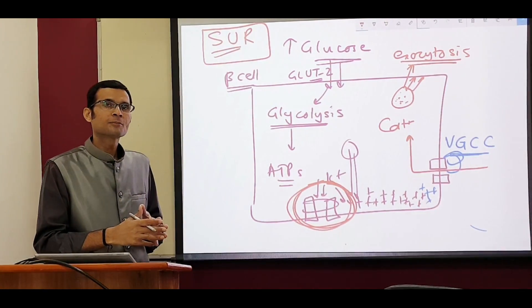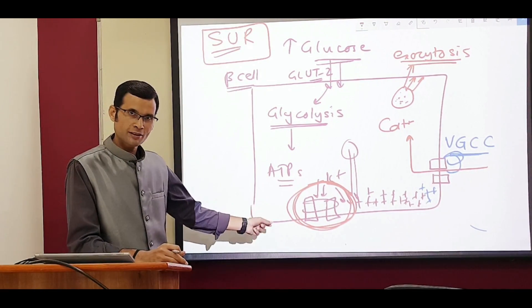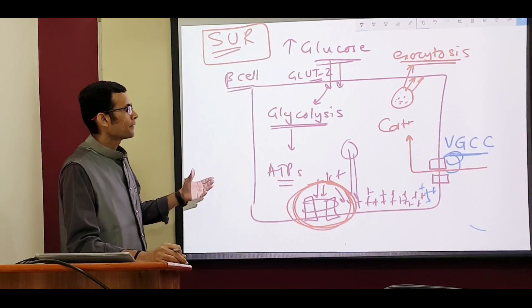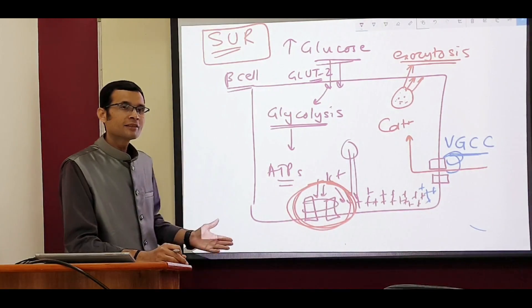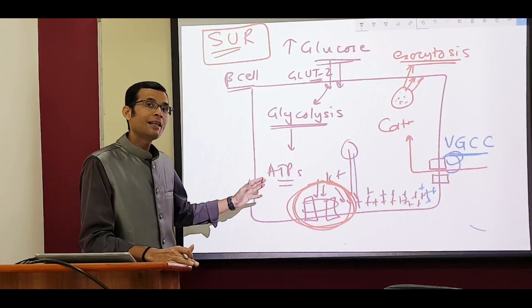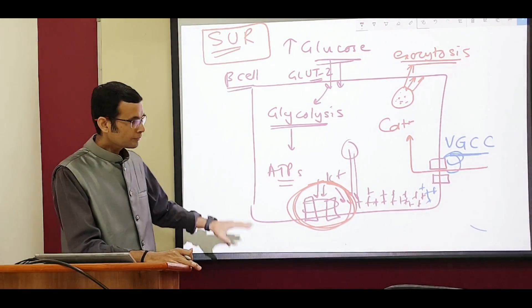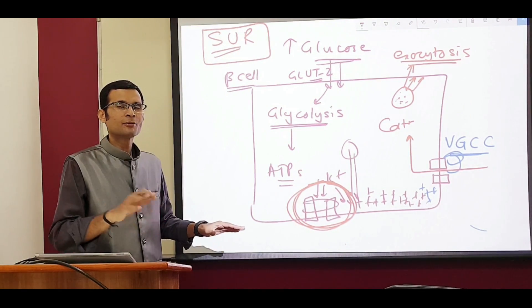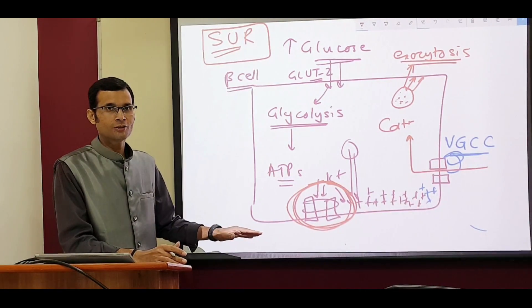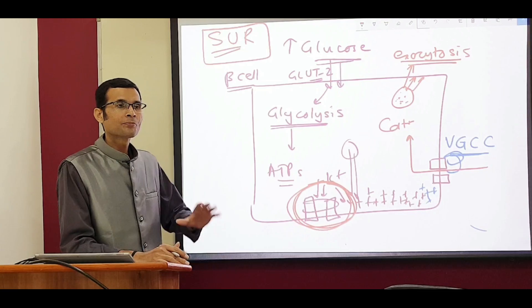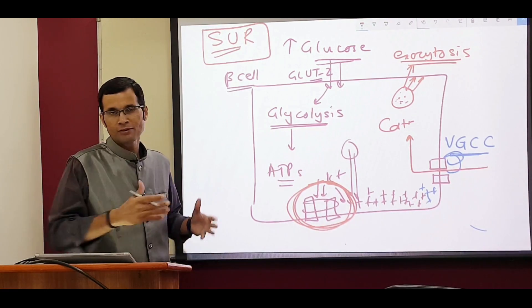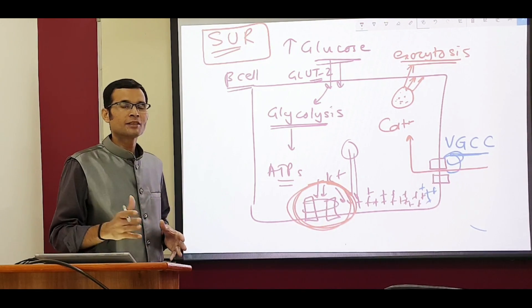The key point to note is that the ATP-sensitive potassium channel closes when ATPs are generated, whereas the O2-sensitive potassium channel closes upon hypoxia — when there is lack of oxygen. So increased ATP production closes one channel, while lack of oxygen closes the other. That is the key difference between O2-sensitive and ATP-sensitive potassium channels: one senses increased ATP levels, the other senses lack of oxygen, and both help indirectly in energy metabolism at their respective locations.